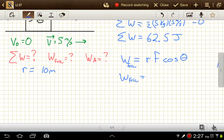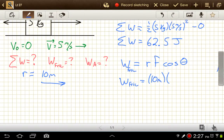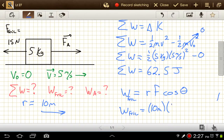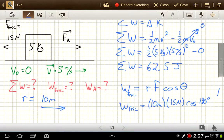10 meters for our value for the distance traveled, and that'll be to the right. So that'll be 10 meters times our force from friction, which was 15 newtons, times the cosine of... So now we need the angle between the R vector and the frictional force vector, which is going to be 180 degrees, or pi radians, if you prefer.